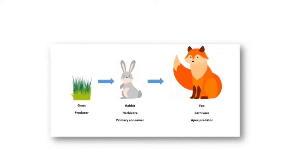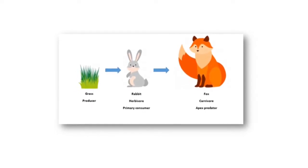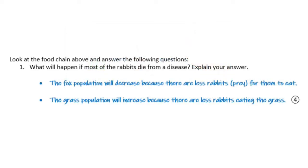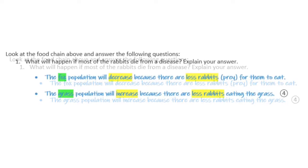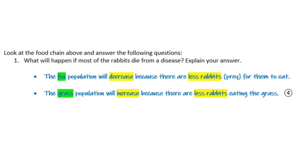Let's think about how fewer rabbits will affect the other two things in the food chain. The foxes eat the rabbits, so how are they going to be affected? The fox population will decrease because there are fewer rabbits, or prey, for them to eat. The grass population will increase because there are fewer rabbits eating the grass. The key words here are decrease in the fox population and increase in the grass population — these are the words you need to give yourself a mark for.